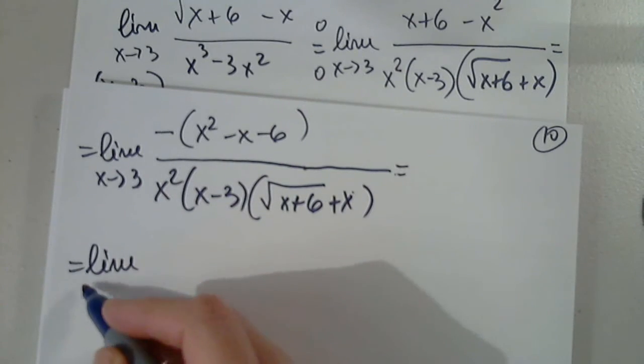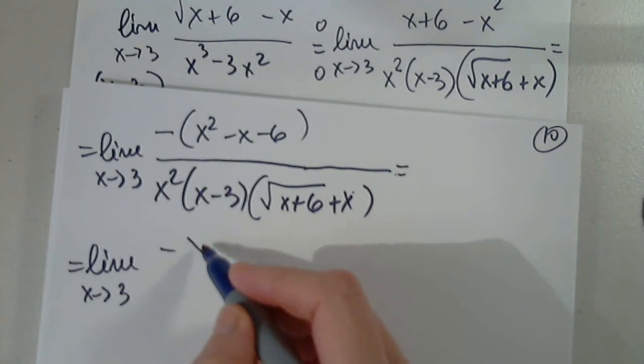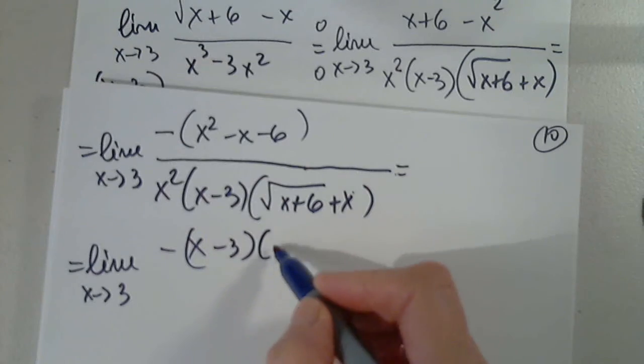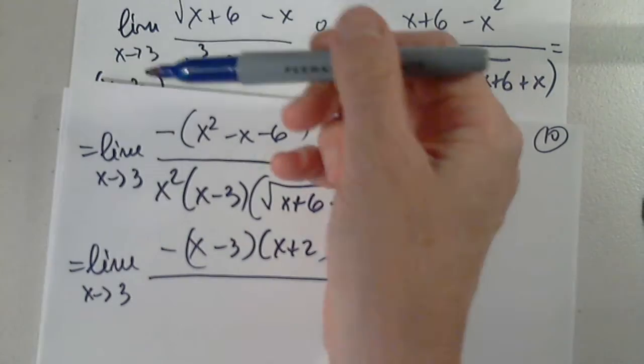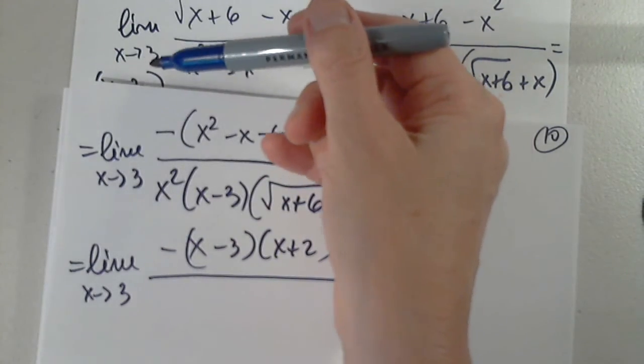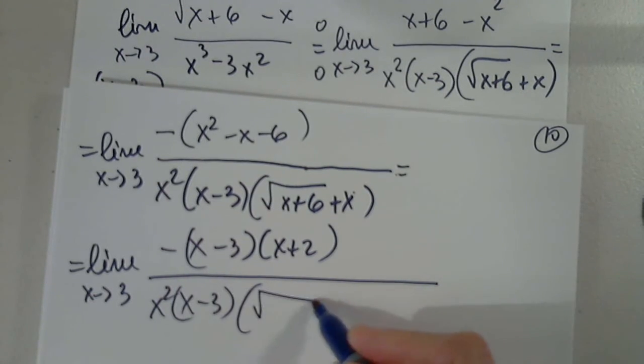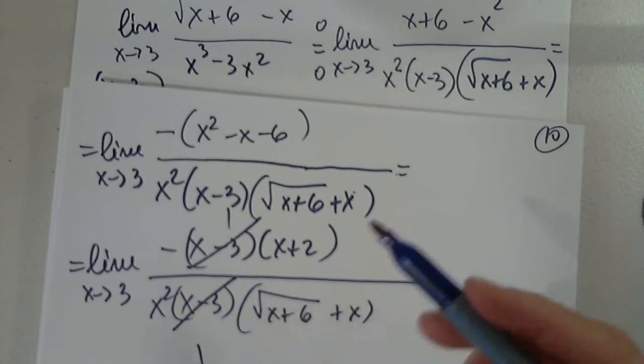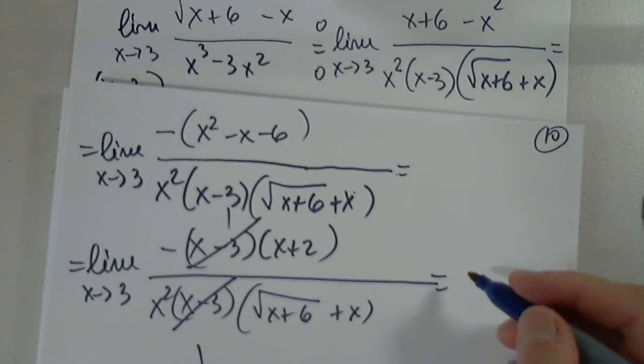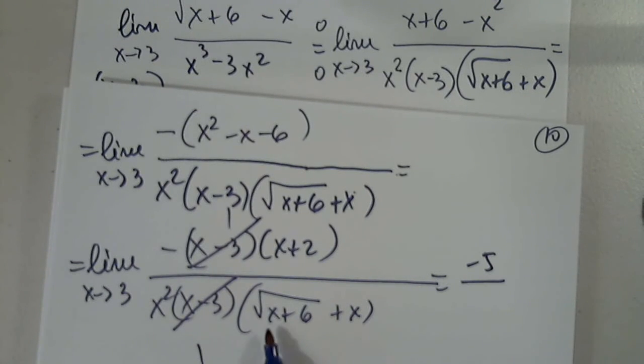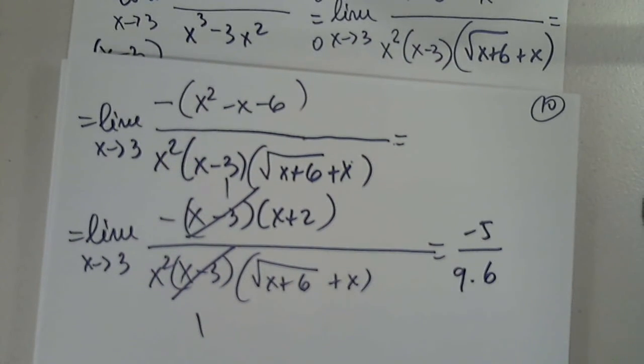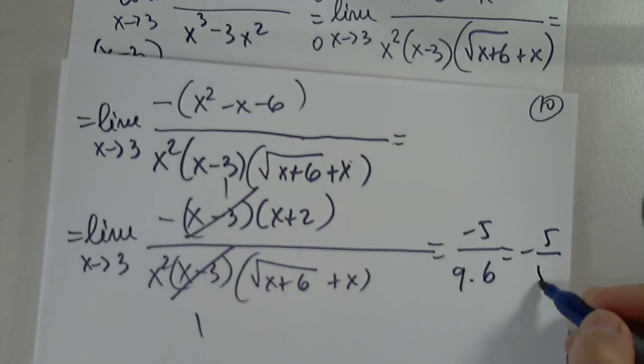So this is limit as x approaches 3, x minus 3 and x plus 2. And as expected, this factor goes away. And x squared. Gone. And now the limit exists. So 3 plus 2 is 5 with minus in front. This is 9. So it's 3 plus 3 is 6 with 9 in front. So this is negative 5 over 54.